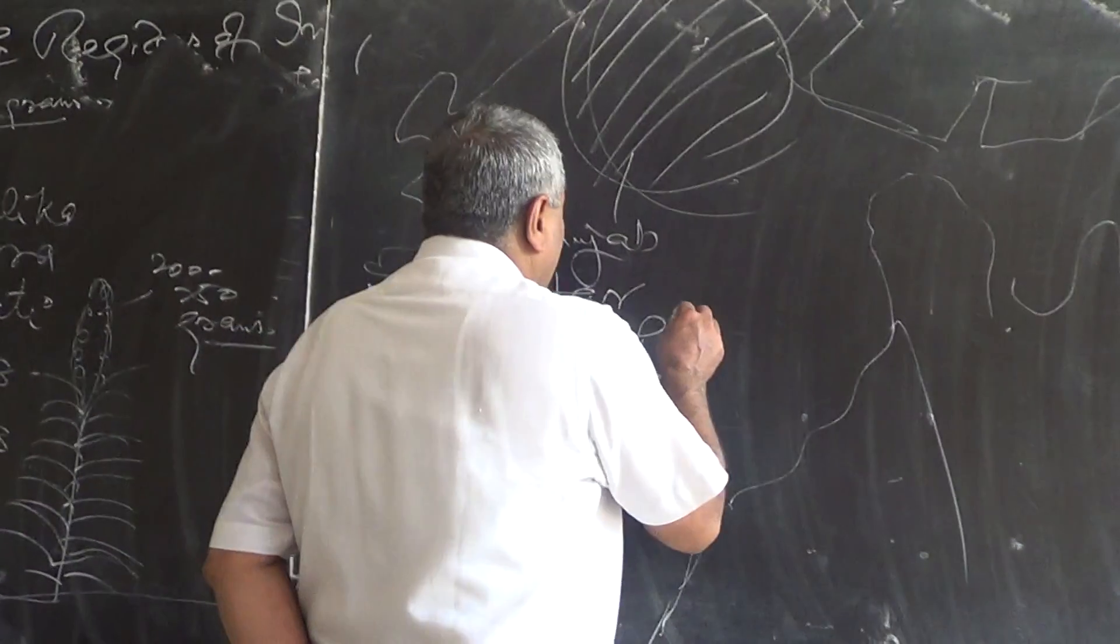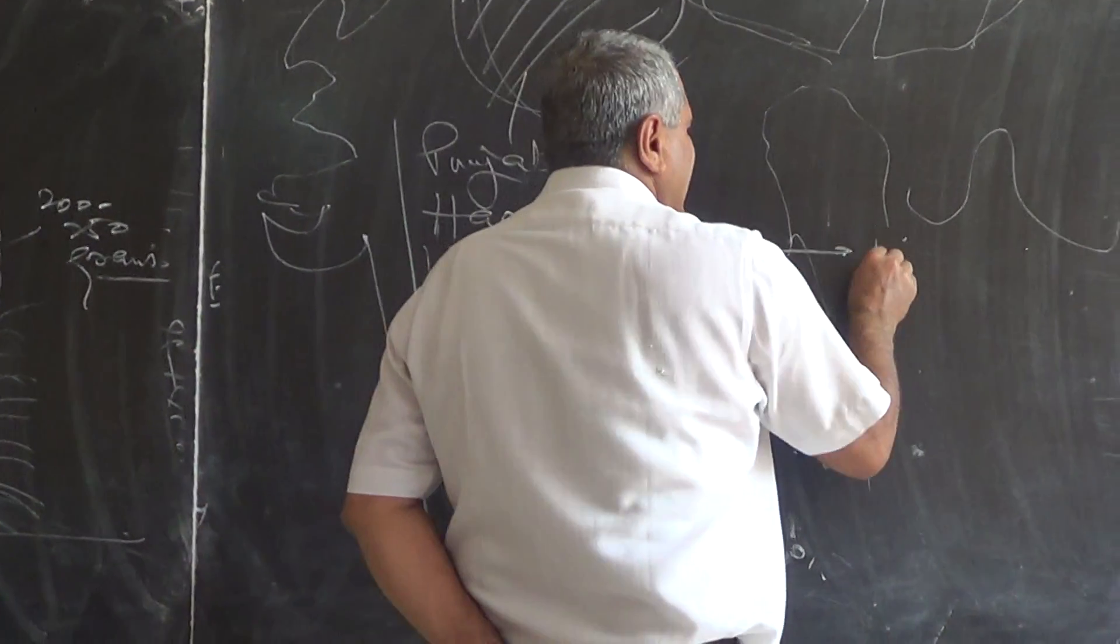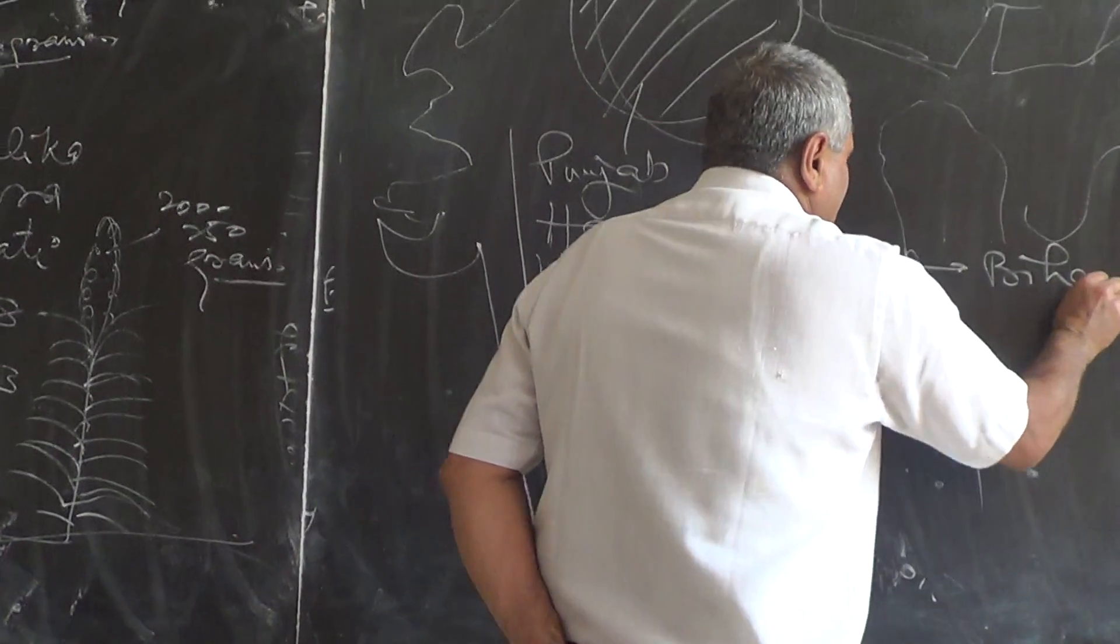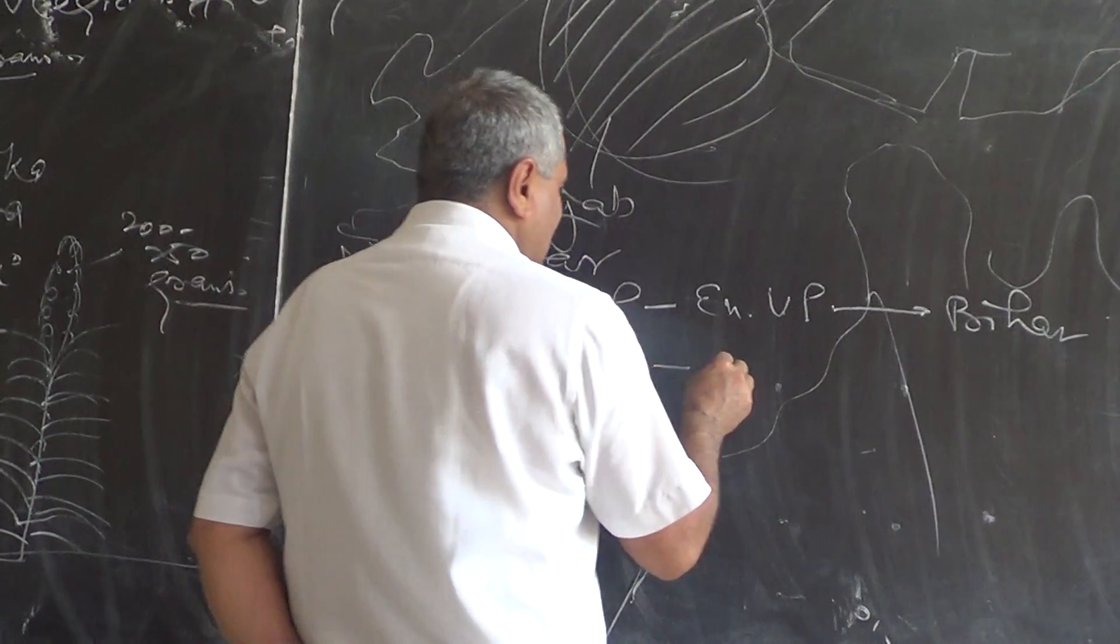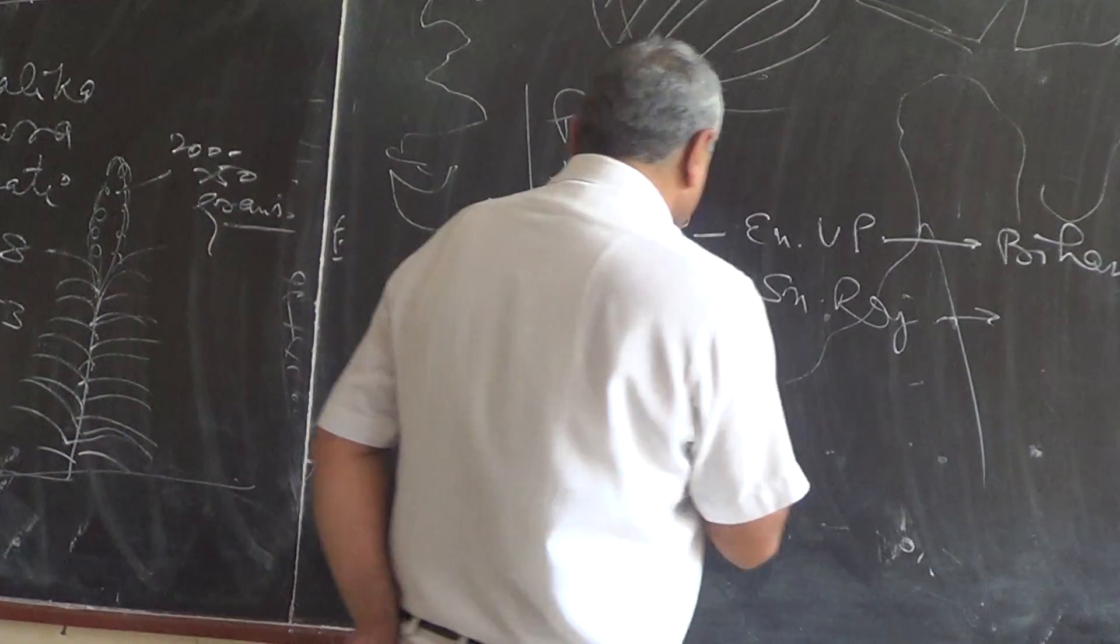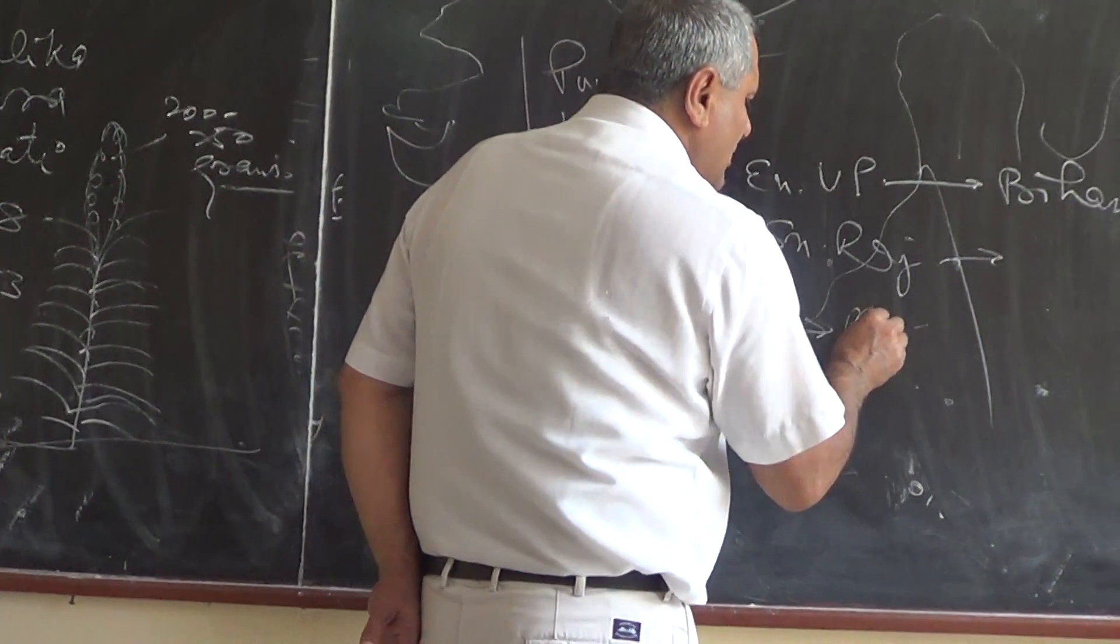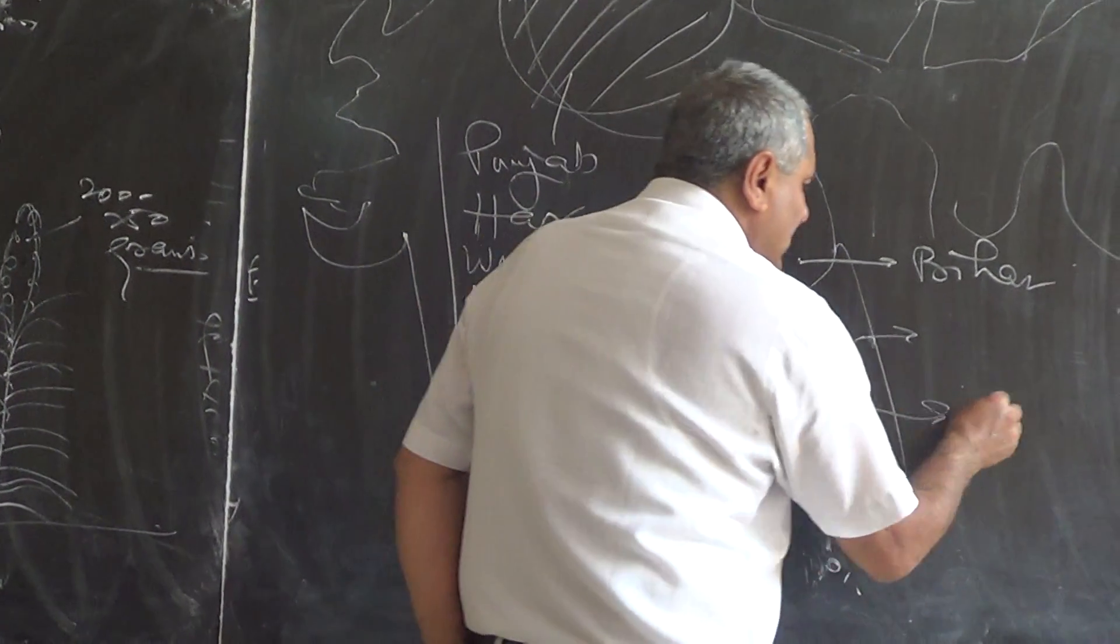But now we are heading towards Eastern UP and further we are heading up to Bihar. And in Rajasthan we are heading to Southern Rajasthan. We are also heading towards Madhya Pradesh and wheat, partly in Maharashtra also, in Gujarat also.